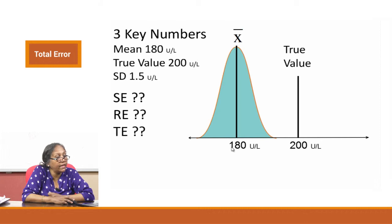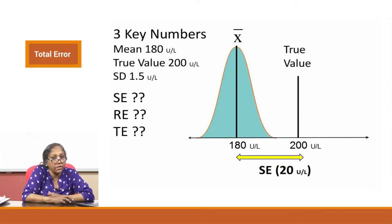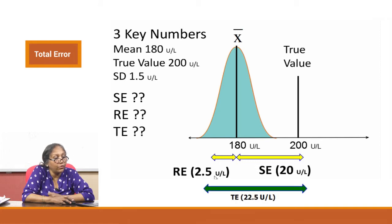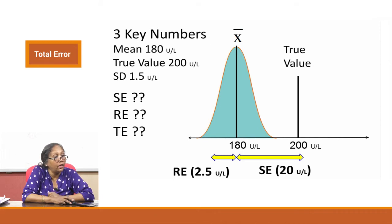Example in units: lab mean = 180, true value = 200, SD = 1.5. Systematic error: 180 − 200 = −20; absolute value = 20. Random error: 1.5 × 1.65 = 2.475 ≈ 2.5. Total error = 20 + 2.5 = 22.5 U/L.